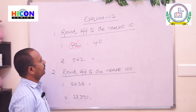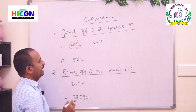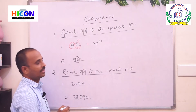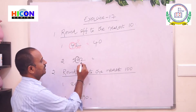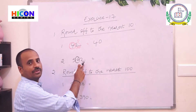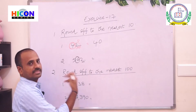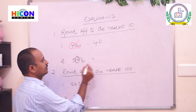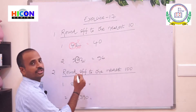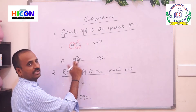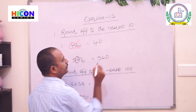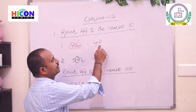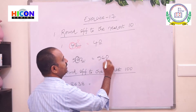Next, see the second problem: 562. Identify the digit in the tens place — 6 is in the tens place. The next digit is 2, which is less than 5, so keep the same tens. There is no change in the tens place, so write 560, placing 0 for the one digit after the tens place. The number becomes 560. If you round any number to the nearest ten, you will get a 0 at the ones place.